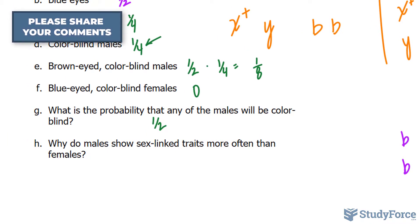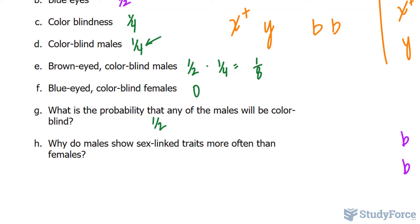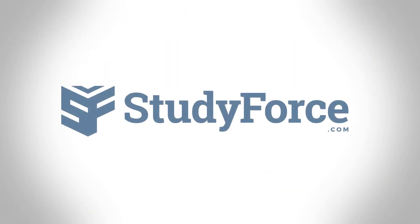And why do males show sex-linked traits more often than females? That's because they have one X chromosome. They do not have a second X chromosome to mask the effects of the defected allele. And there you have it. That is how to answer colorblindness and eye color genetics questions.